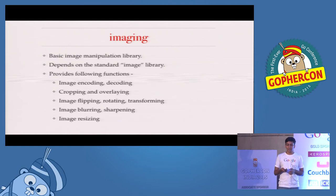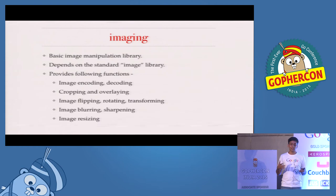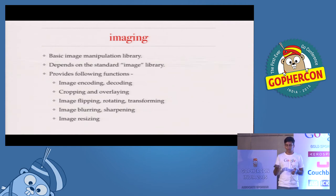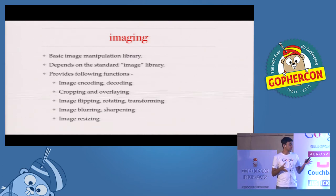The next library is the Imaging Library, which is basic image manipulation. It depends on the standard image library but extends what's available. It can do basic image encoding and decoding, cropping, and different manipulations like flipping images, stitching two or multiple images together, blurring, sharpening, resizing, transforming, and all this stuff.